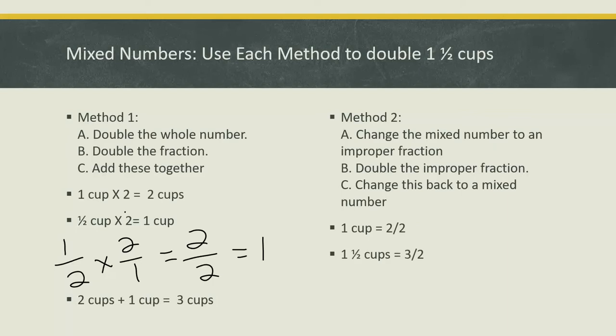Now we're ready to double three over two. We're going to take three halves times two over one, multiply across the top, three times two is six, two times one is two. Six halves, or six divided by two, gives us three cups.